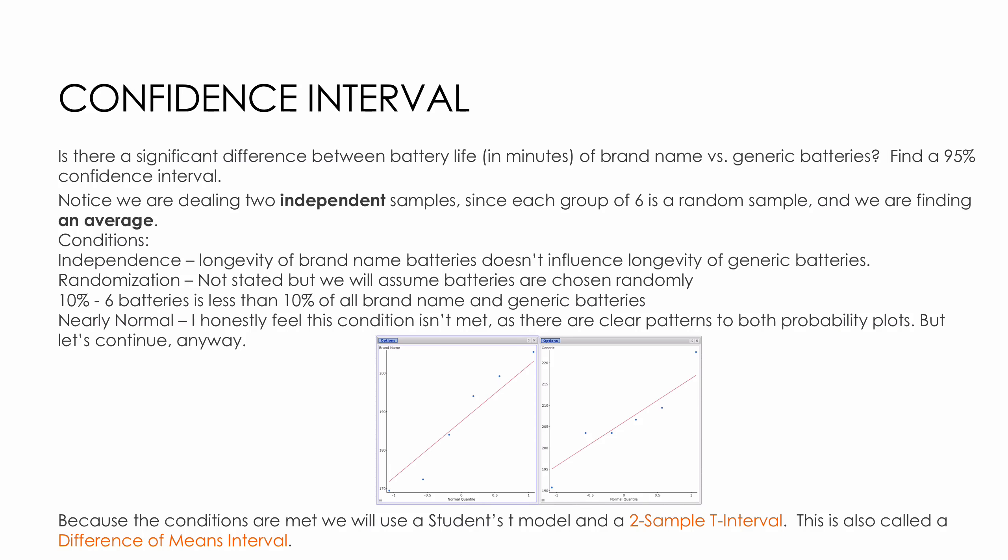If I'm looking at this question with the battery life, note that the reason I chose the test that I did is I'm dealing with two independent samples, independent because there were two randomly selected samples, and we're finding an average. That's why it's a difference of means, and we'll talk about that more in a minute. It's a two-sample T interval.